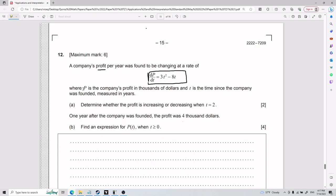Where P is the company's profit in thousands of dollars, and t is time since the company was founded. All of this in units of years.